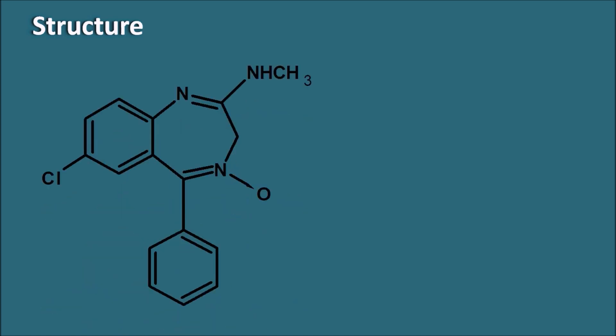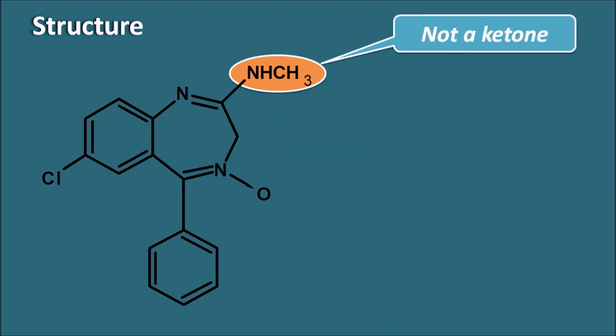Chlordiazepoxide has the benzodiazepine ring system, but with two important structural changes compared with other benzodiazepines. At the second position, it has a methylamino group — normally benzodiazepines have a ketone group at the second position. Similarly, many benzodiazepines have two nitrogens at the first and fourth positions, making them 1,4-benzodiazepines. Chlordiazepoxide is also a 1,4-benzodiazepine but has an extra oxide at the fourth position, making it a 1,4-benzodiazepine 4-oxide.